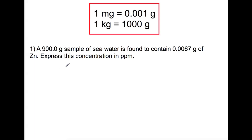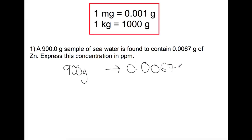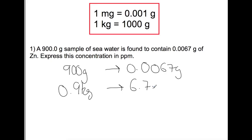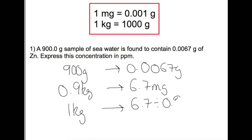In the first example, we have 900 grams of water containing 0.0067 grams of zinc. We convert to kilograms by dividing by 1000, and convert grams of zinc to milligrams by multiplying by 1000. Scaling up to 1 kilogram by dividing by 0.9 on both sides gives 7.4 milligrams in 1 kilogram, so we have 7.4 parts per million.